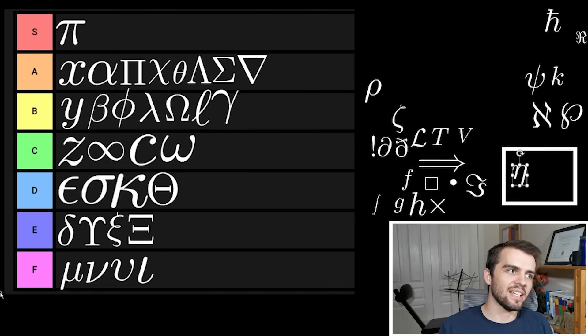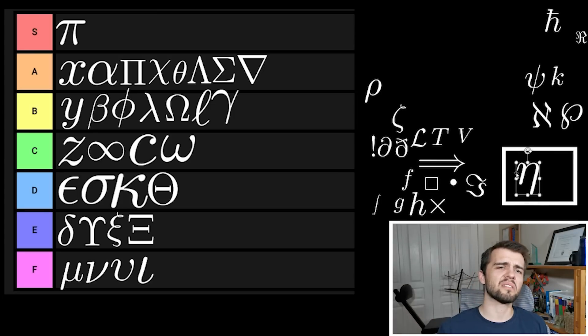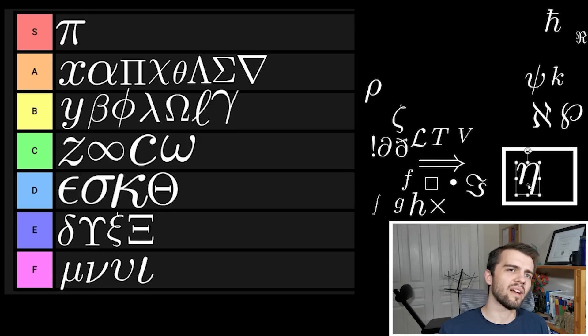Now we got eta. Eta's kind of like mu but it's not this F tier stuff where it gets confused a lot. I think when people use eta it's generally known what it means. It's kind of one of those symbols that you think why not use another symbol, like a little N or whatever. I think this is C tier because it still has its purpose.